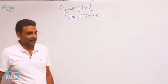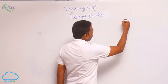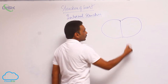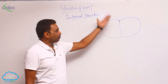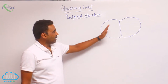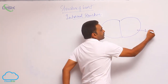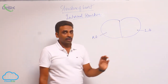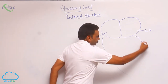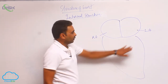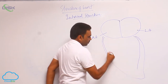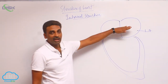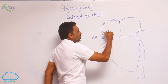Now let us see the internal structure of the heart. We start with the upper two chambers. This is the left atrium and this is the right atrium. When compared to the ventricles at the bottom, the ventricles are thick chambers, but the atria are thin chambers.